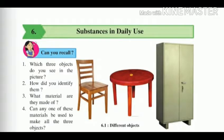Can you recall which three objects you see in the picture? Chair, table, or cupboard. How did you identify them? They are identified by their specific arrangement. What material are they made up of? They are made up of wood, plastic, and steel.